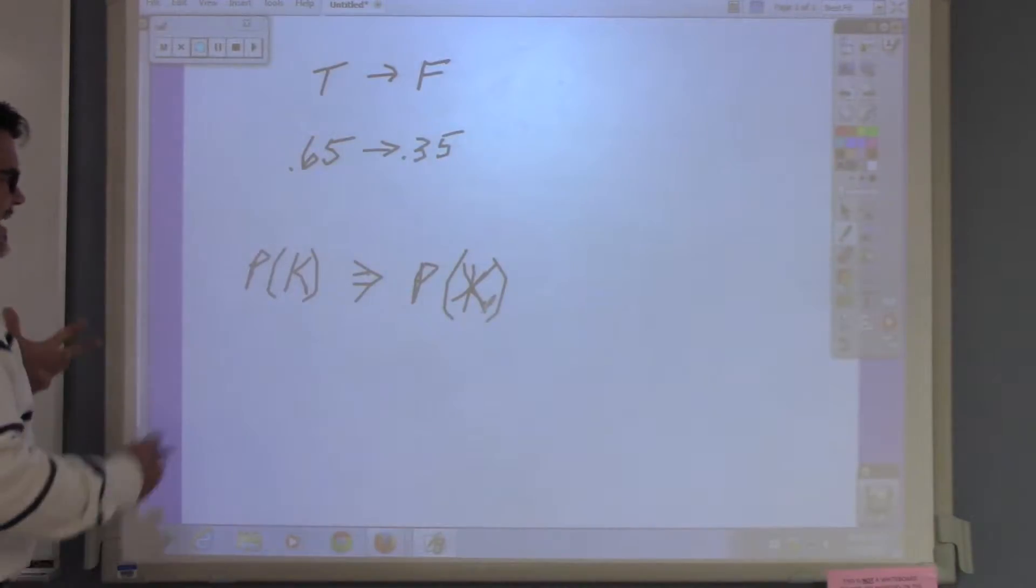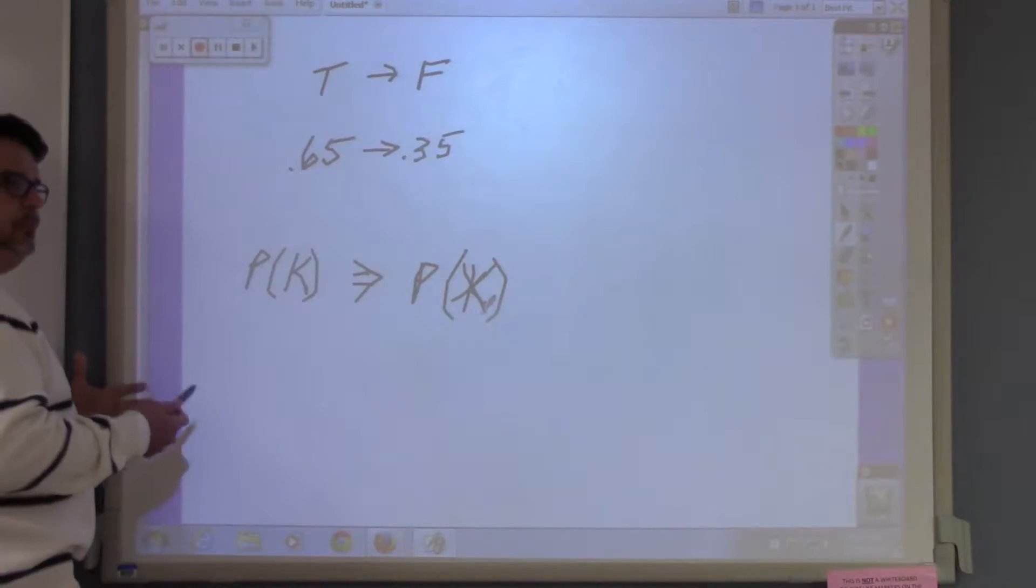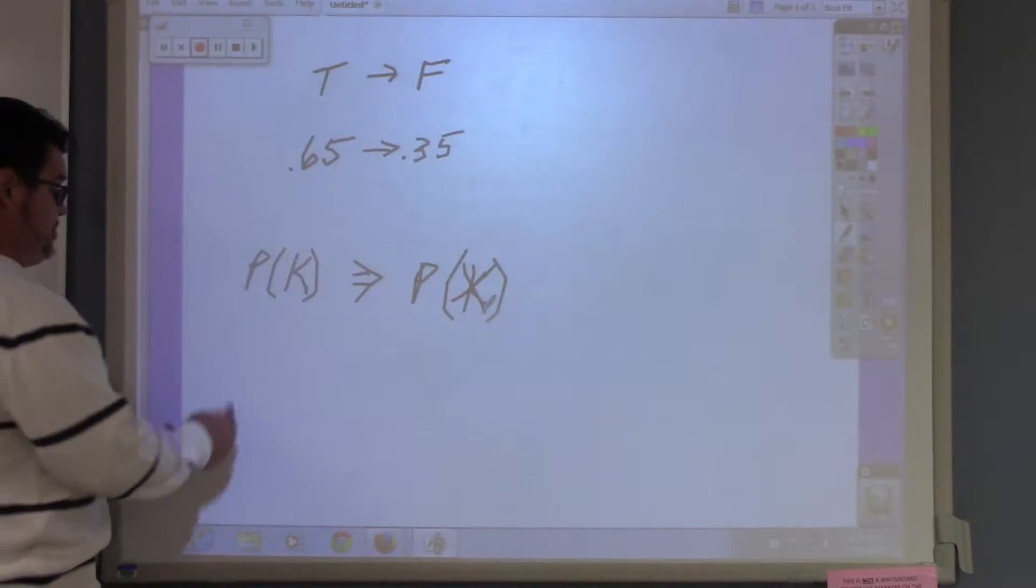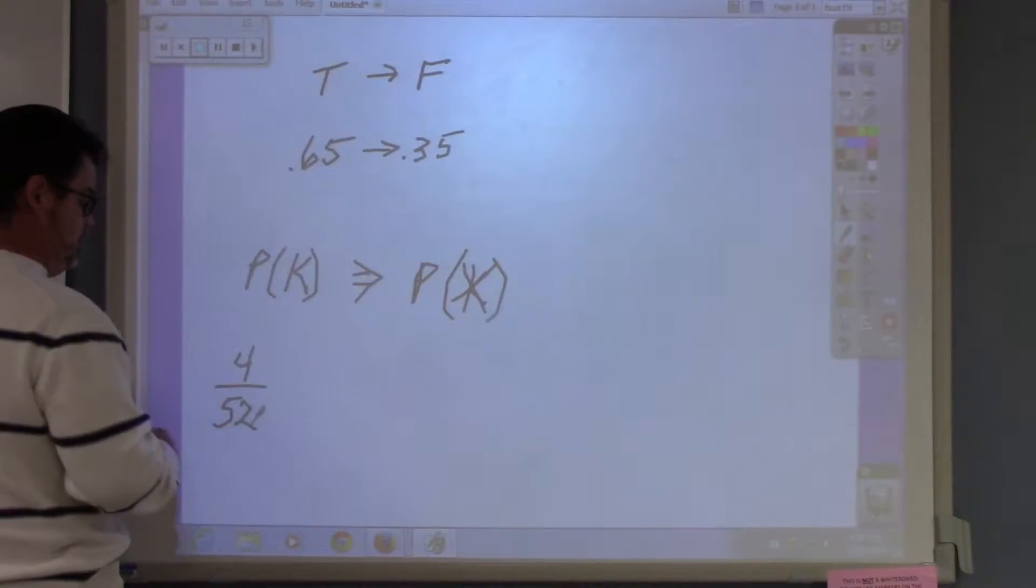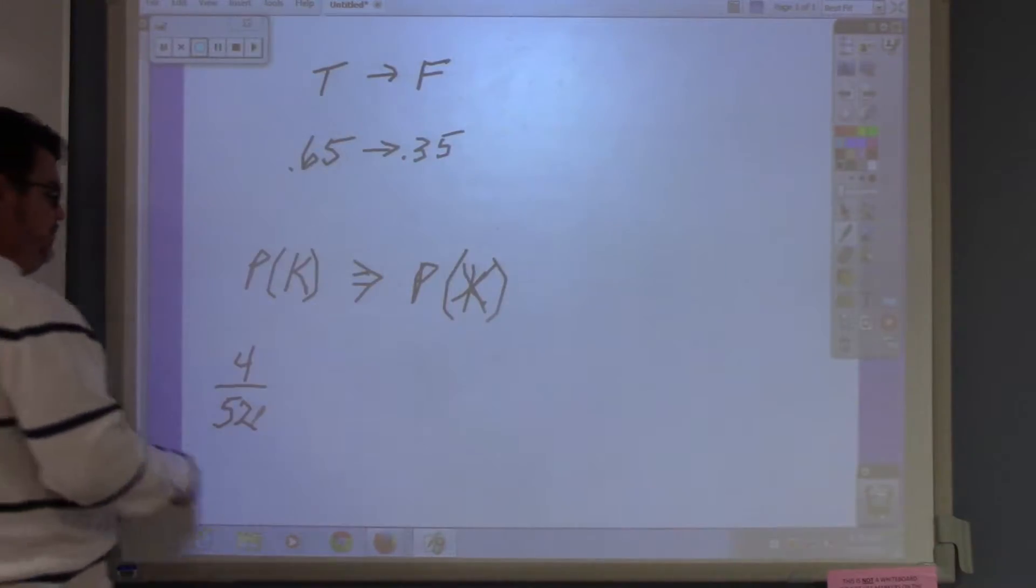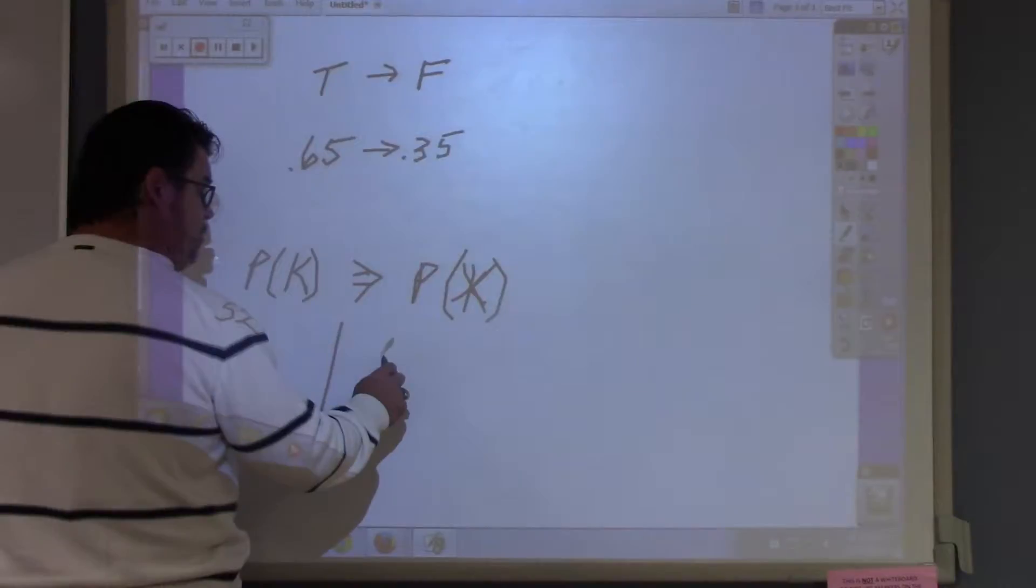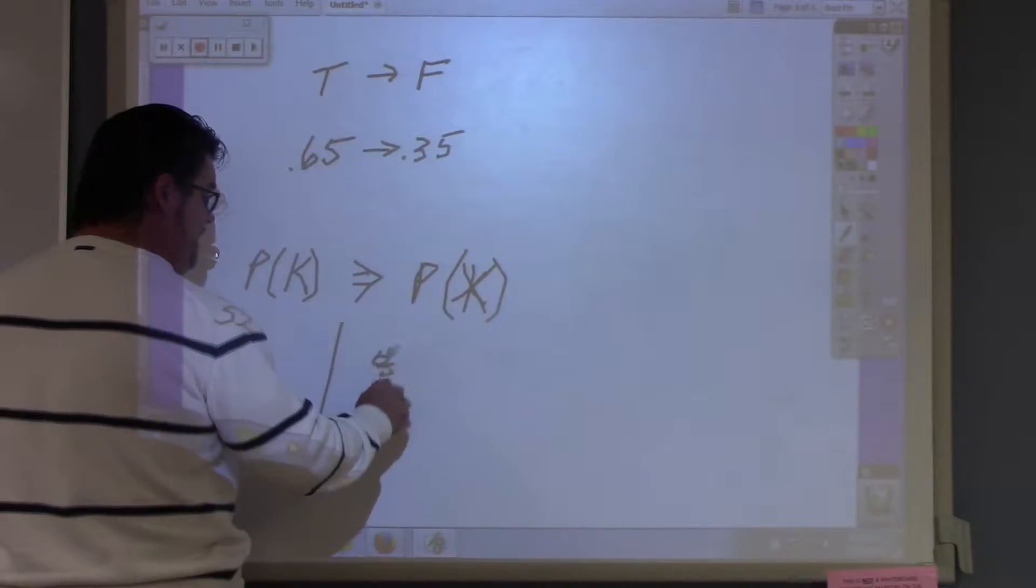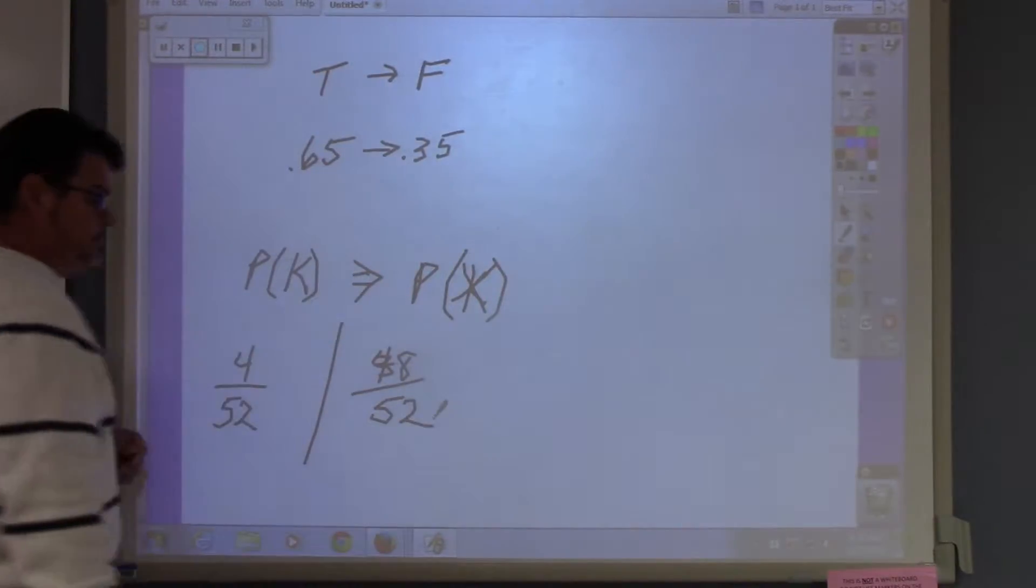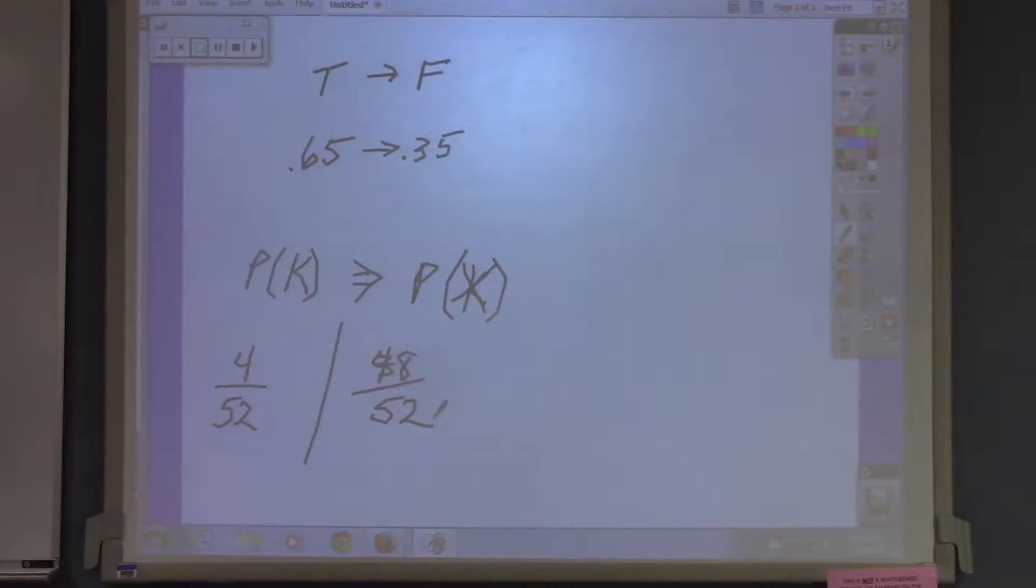So if I asked you what is the probability of picking a king, you'll say four over fifty-two. If I asked you for the probability of not picking a king, you would say forty-eight over fifty-two. And that's the complement. What makes up the whole? The whole is fifty-two. Not one, but now the whole is fifty-two.